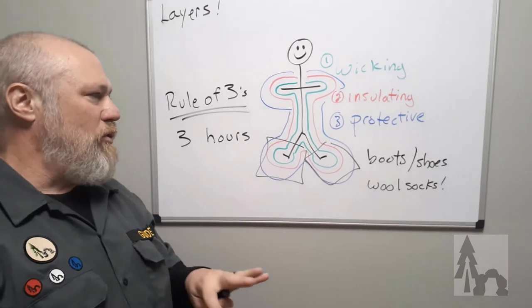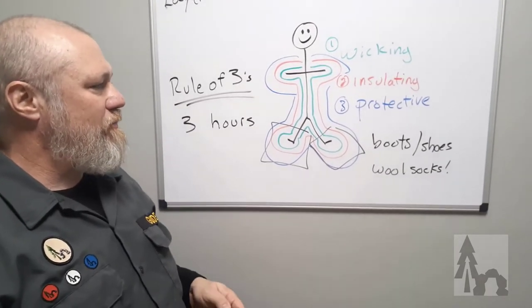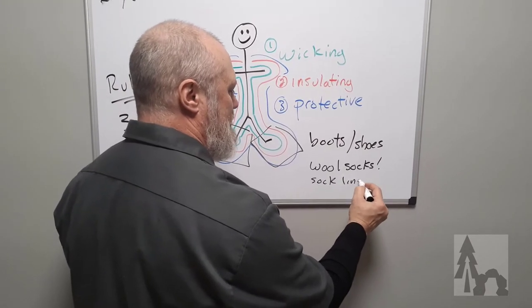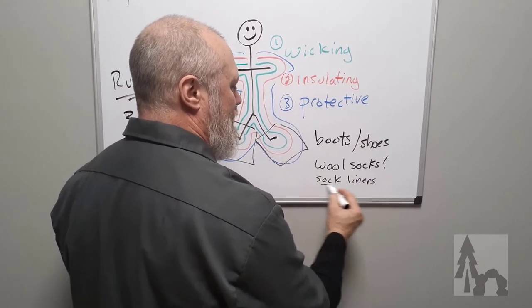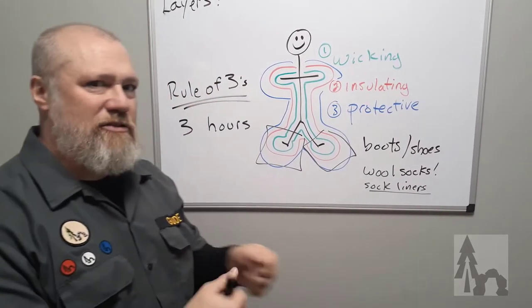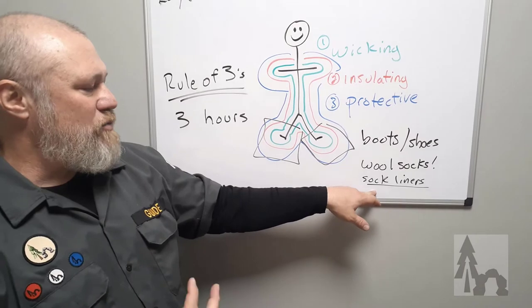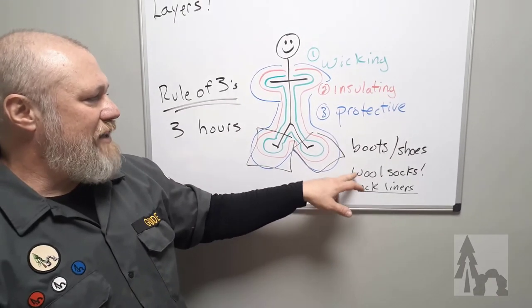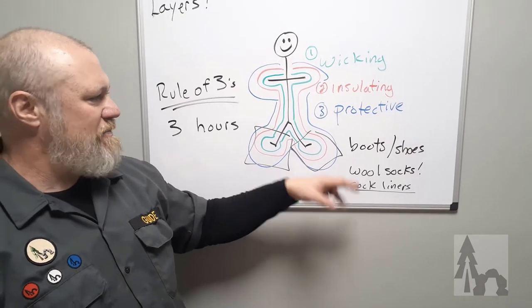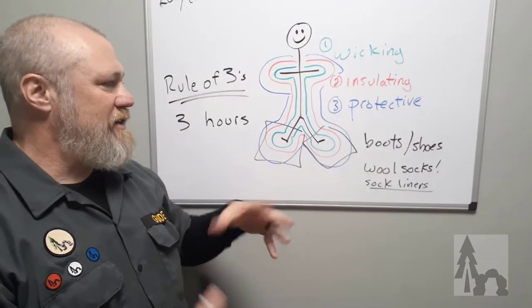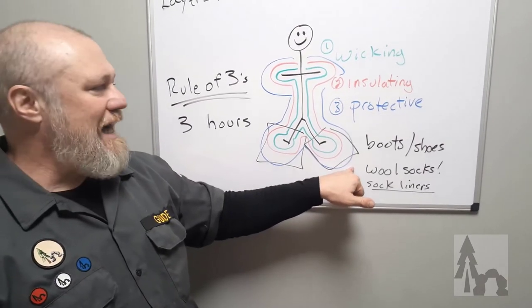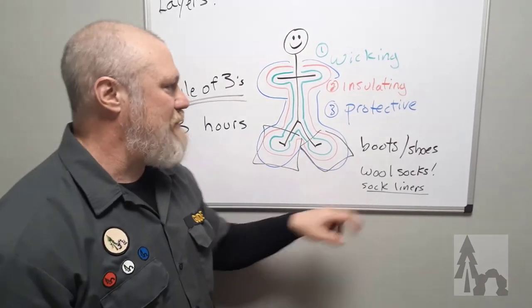Some people, because the wool irritates their feet, like to run a set of sock liners. You can put a pair of silk or polyester sock liners. Even men's dress socks work really well for this. Those sock liners will wick moisture away and the wool, even though it might absorb some moisture from your feet or through the sock liners, even wet wool is going to maintain most of its insulated value. So a good pair of wool socks. Again, no cotton when you're trying to stay warm.